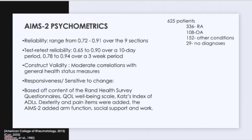The AIMS-2 psychometrics: there was a study done with 625 patients — 336 with rheumatoid arthritis and 108 with osteoarthritis, with others having other conditions or no diagnosis. It has good psychometric properties overall. What makes it unique is that it includes measures of satisfaction with health and additionally the patient's priorities for improvement. The full length versions are quite time consuming to complete, but the short form for the AIMS-2 has similar psychometric properties to the full length versions.